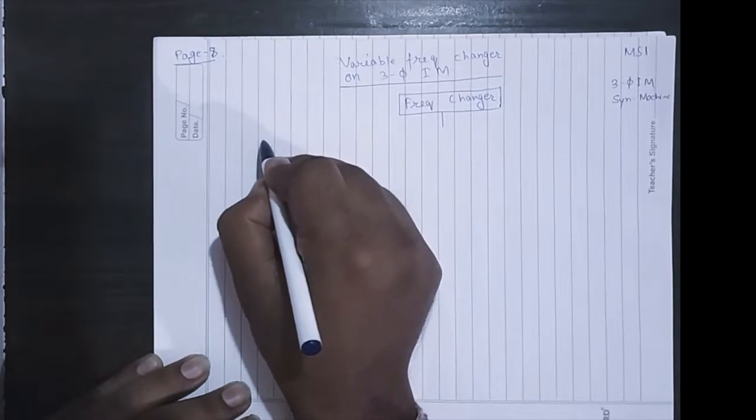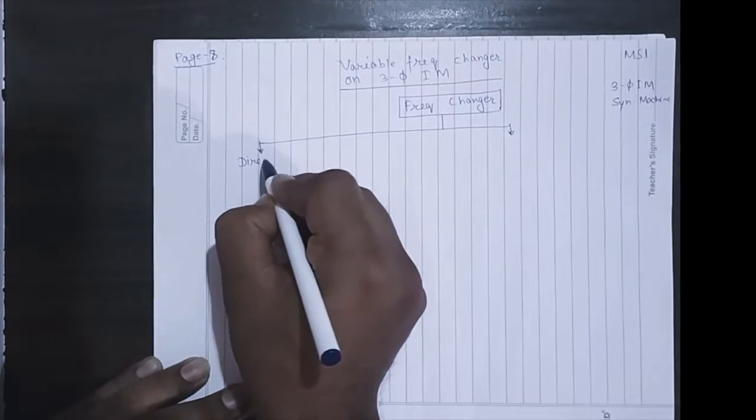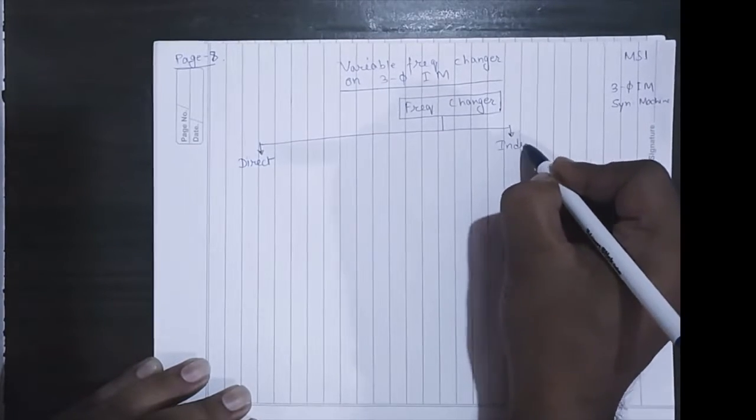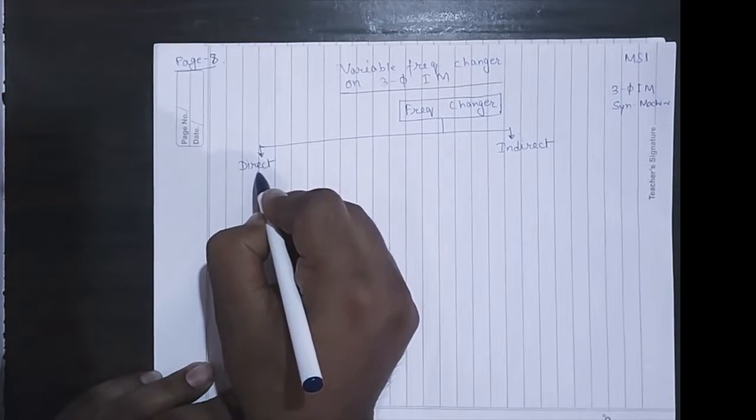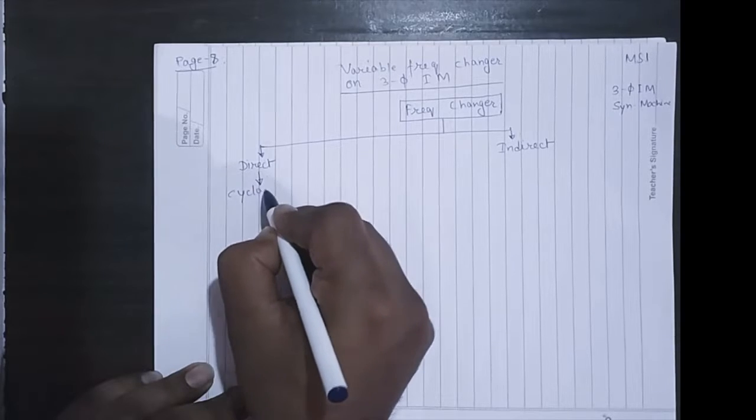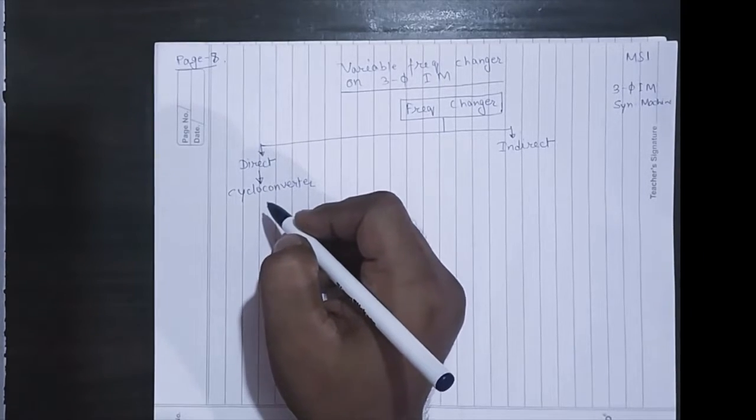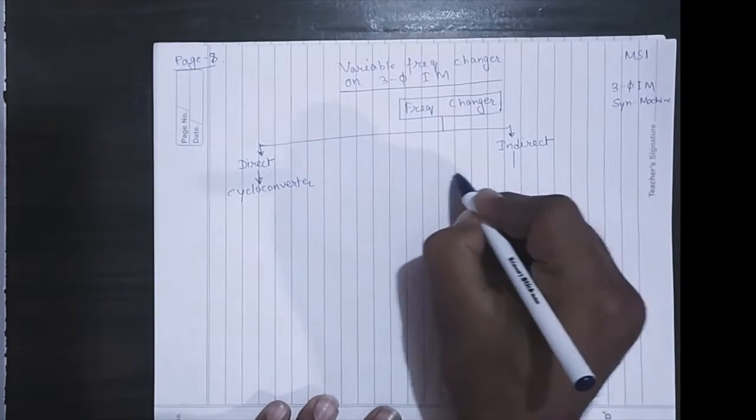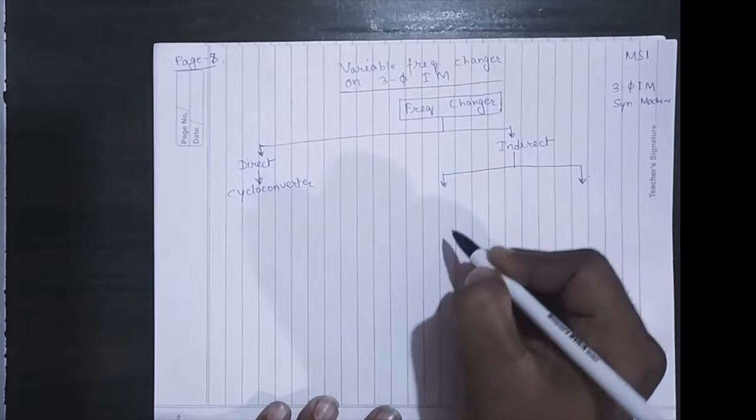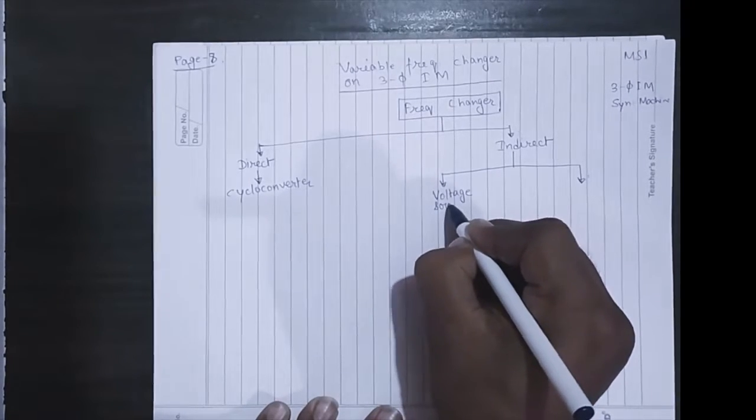So this frequency changer can be classified into two parts: one is direct method, another one is indirect method. In direct method we have cyclo-converter that you have studied in earlier courses, and in indirect method it is divided into two parts: one is VSI or voltage source inverter.